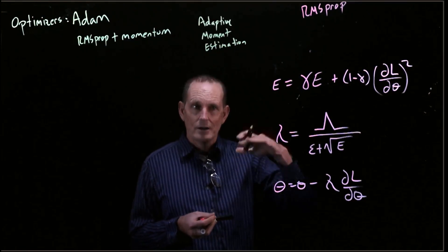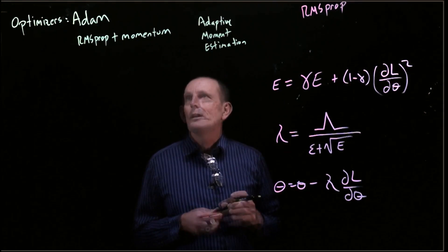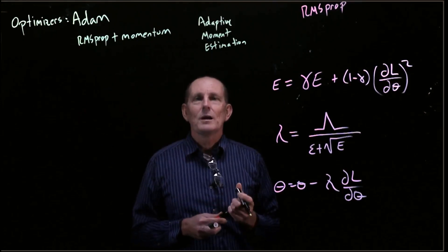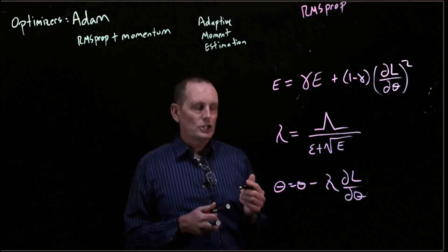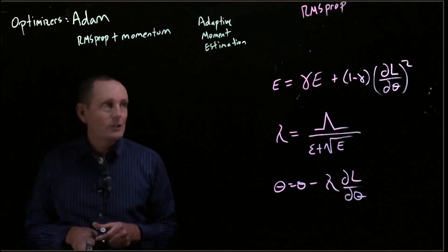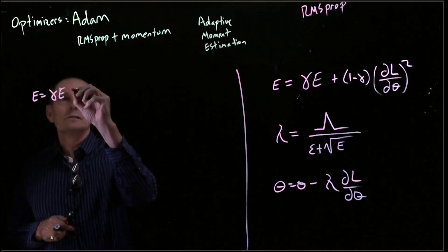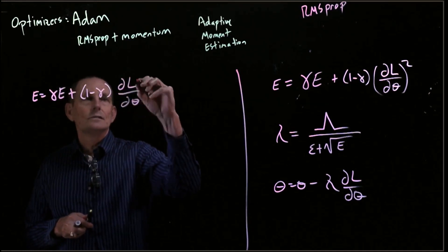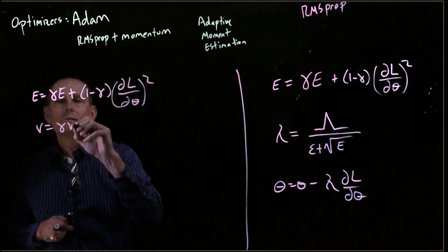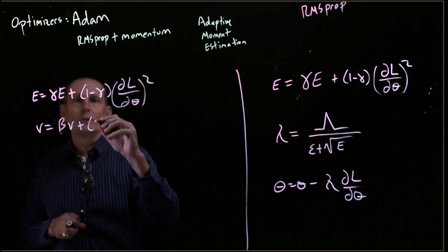It's really very much like RMS prop plus momentum with a small change. So we are going to have E, we're going to have V, two hyperparameters.